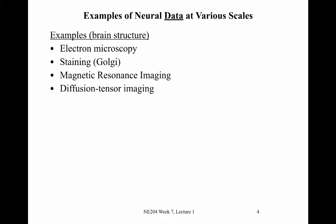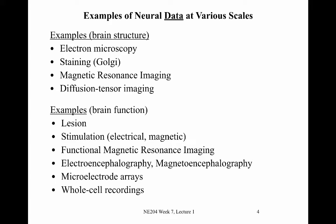We began this semester by thinking about neural data recorded at various scales. We thought about examples of brain structure, for example diffusion tensor imaging, where we get beautiful pictures of white matter tracks between brain areas. We also looked at examples of brain function, ranging from single cell recordings where a tiny electrode records action potentials from an individual neuron, all the way up to entire brain observations such as functional magnetic resonance imaging.